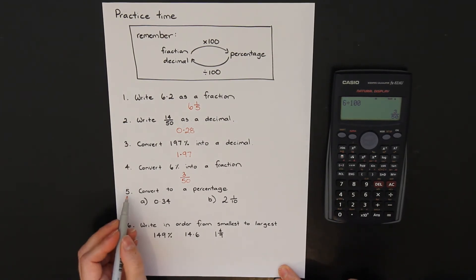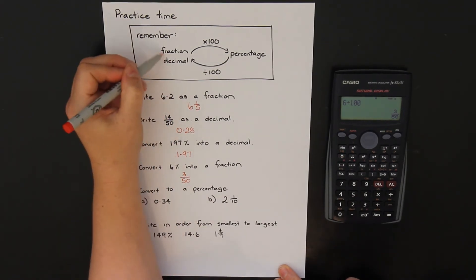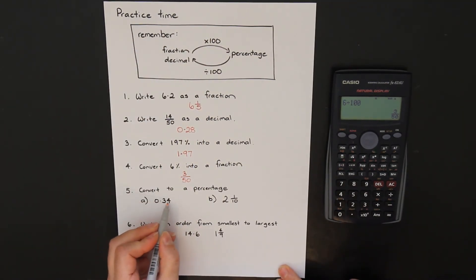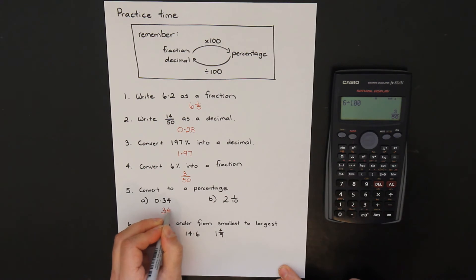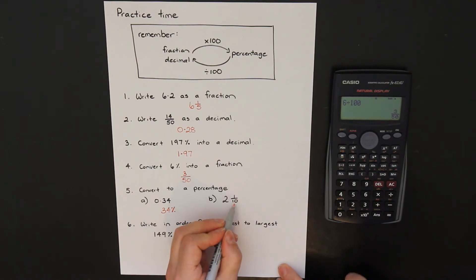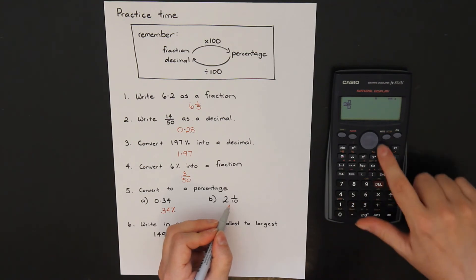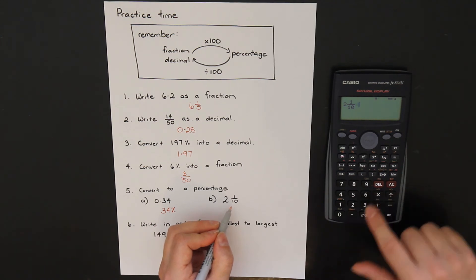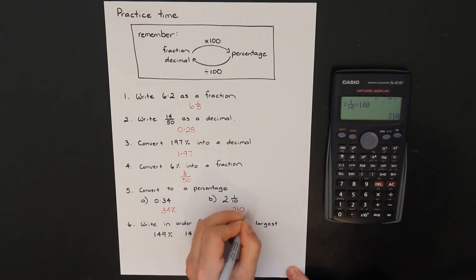Question 5: convert to a percentage — going from a decimal and fraction to a percentage means multiply by 100. So 0.34 multiplied by 100 — jumping two decimal places — gives 34%. For 2 and 1 over 10: use the mixed numeral button, type 2 at the front, 1 over 10, multiply by 100 equals 210%.